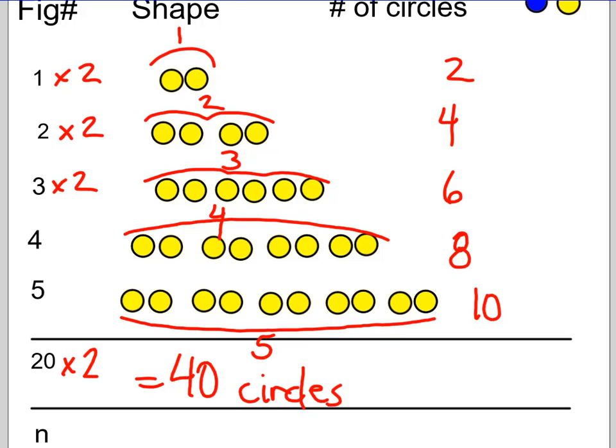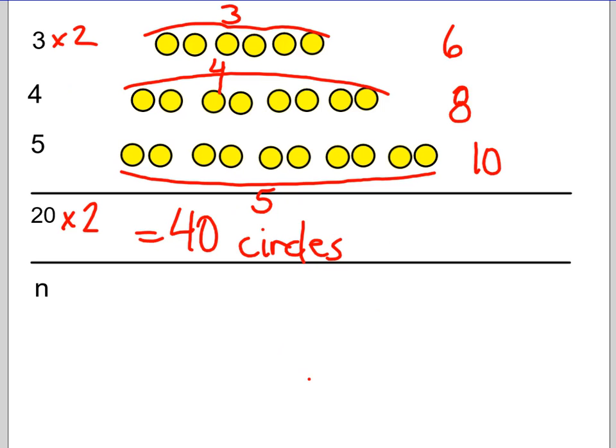Where we do want to explore something a little more challenging, though, is what if I had n? Okay, and n is just some number. We don't know how many it is. Well, we would follow that same pattern. We would say it's n times 2. So the number of circles would be 2n, or 2 times n.